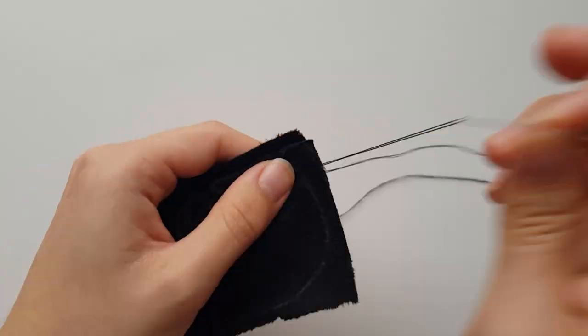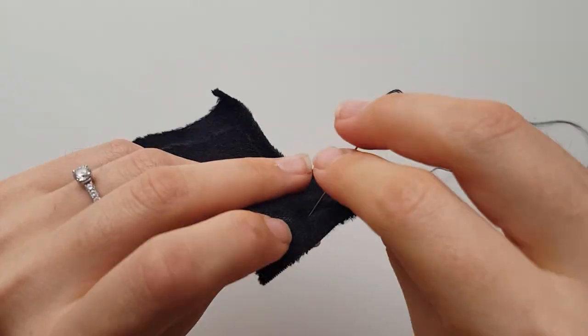Place both of the pot sides together with the tracing showing and sew them around the curved side leaving the top straight edge open.